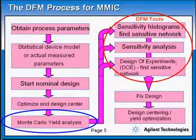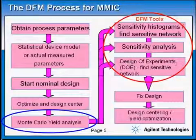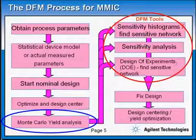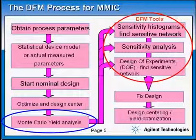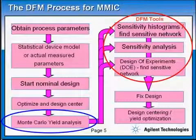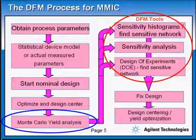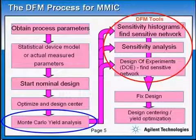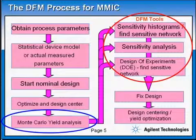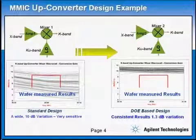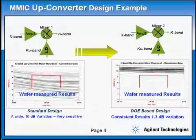The DFM tools in ADS help us to pinpoint and exactly find where the yield problem is originating from in our design. We can then focus all our efforts to fix this problem and improve the quality of our design. Having fixed the design, the next step is to do a final design centering run and take the design for fabrication. This methodology is identical to what was used in converting the upconverter macrocell example that I talked about before.